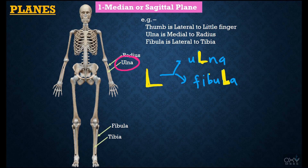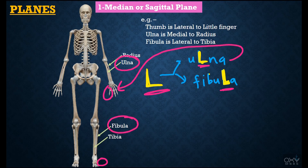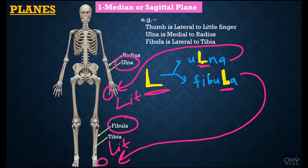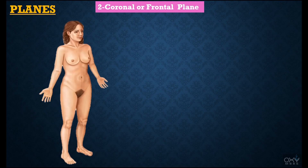Now, how will you remember that the ulna bone is present towards the little finger and the fibula bone is present towards the little toe? It is very simple: the 'L' in ulna and fibula will remind you that the ulna bone is present towards the little finger and the fibula bone is present towards the little toe.